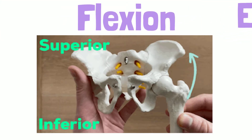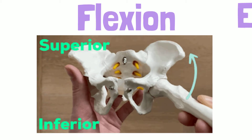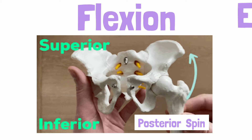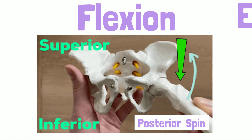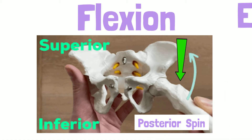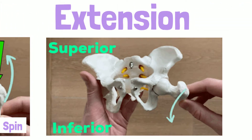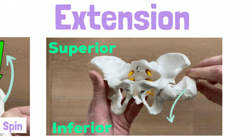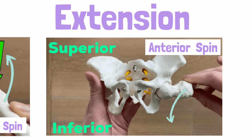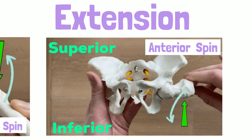Here, the femur spins on top of the acetabulum. With flexion, the femur spins posterior — observe the greater trochanter move posterior. With extension, the femur spins anterior — observe the greater trochanter move anterior.